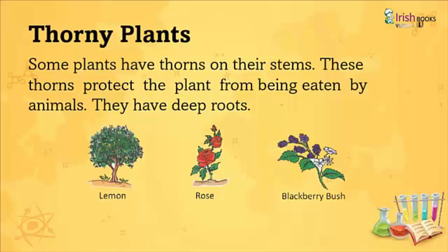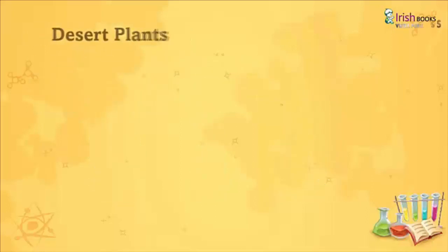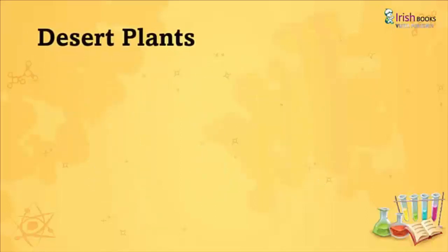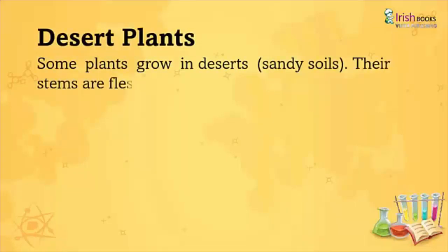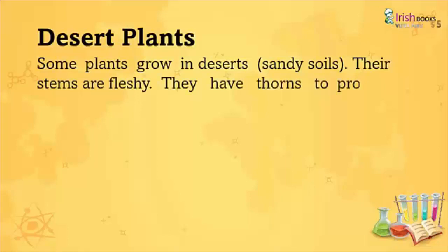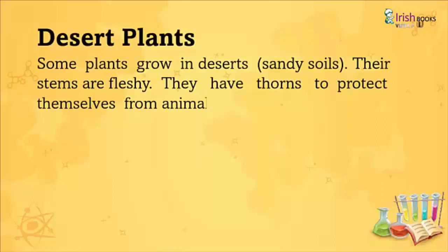Desert Plants: Some plants grow in desert or sandy soil. Their stems are fleshy and they have thorns to protect themselves from animals. An example is the cactus.